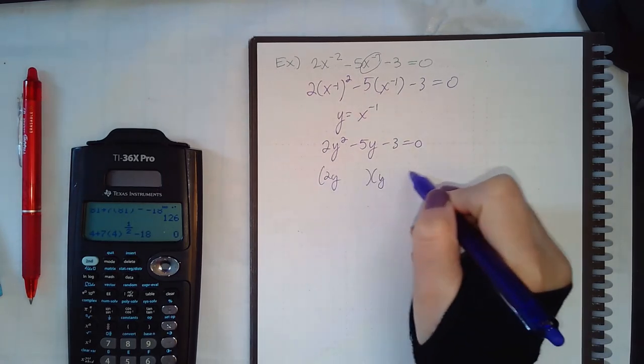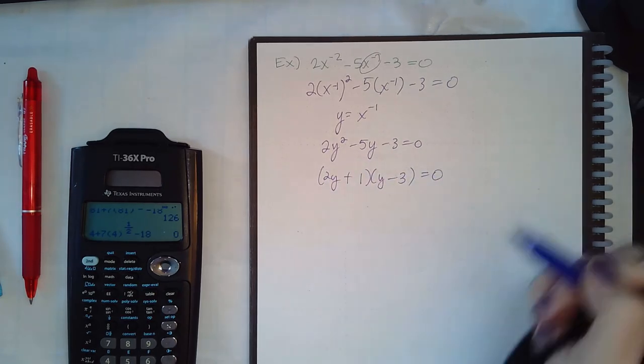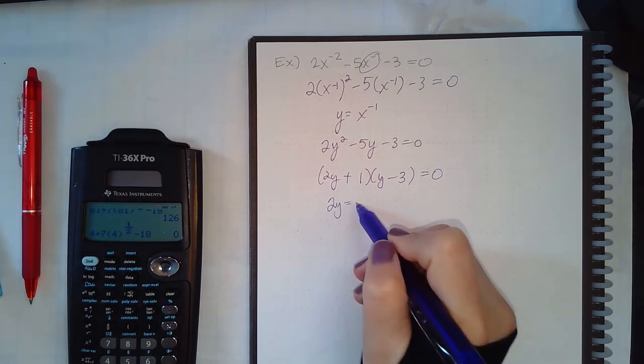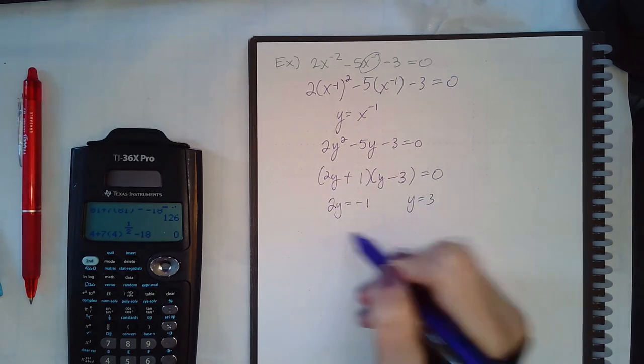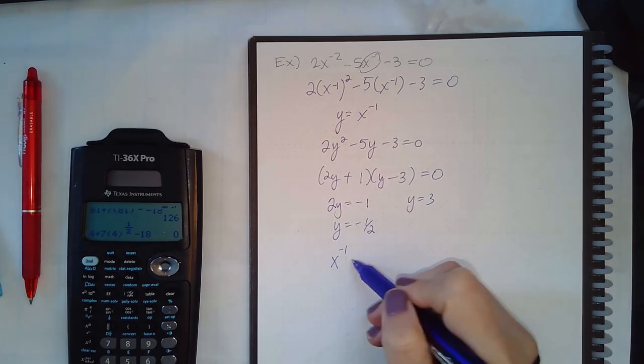And if I try to solve that, we can factor it like that. So I will get 2y equal to negative 1, y equal to 3, y equal to negative one-half. Plug back in what y represents.